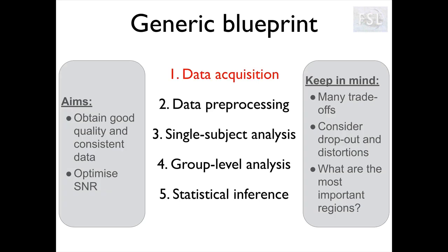Let's start from data acquisition. The aim of data acquisition is to obtain good quality data, consistent data, and to optimize signal-to-noise ratio. When we acquire our data, we need to keep in mind that we need to make some trade-offs, for example between resolution and acquisition time. We talked a lot about the presence of dropouts and distortions and the need to think about what are the most important regions for our study, so that we can optimize the protocol and minimize artifacts there.